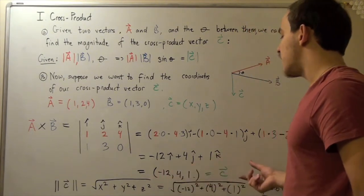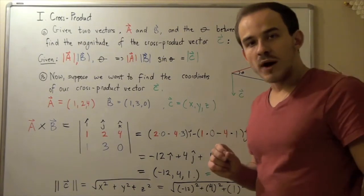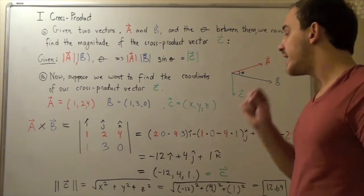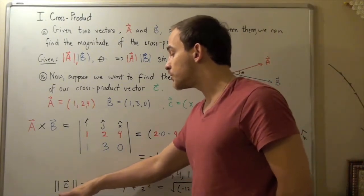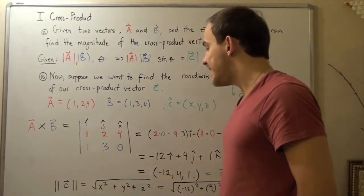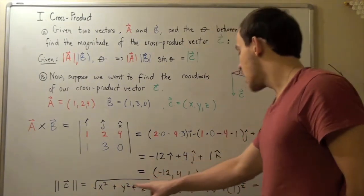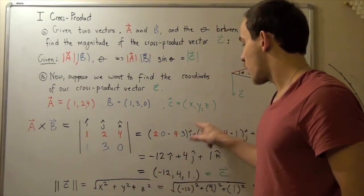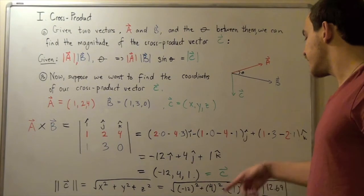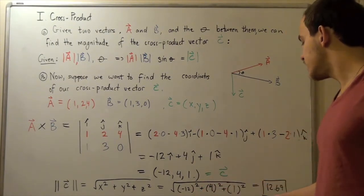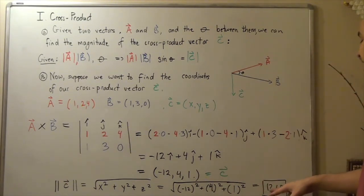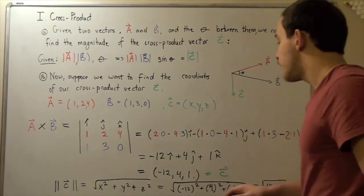If I wanted to, I could plot this vector on the x-y-z plane. I can also find the magnitude of this vector from its three coordinates. The magnitude equals the square root of x-squared plus y-squared plus z-squared. So: minus 12 squared is 144, plus 4 squared is 16, plus 1 squared is 1, giving 161. The square root of 161 is approximately 12.69. That is the magnitude — the quantity of this vector.